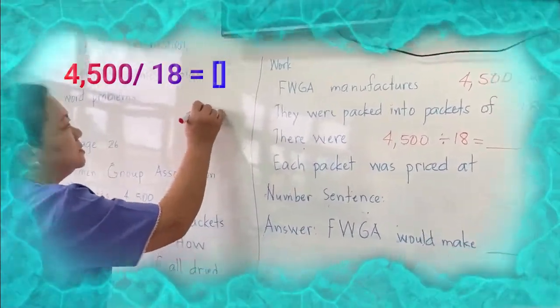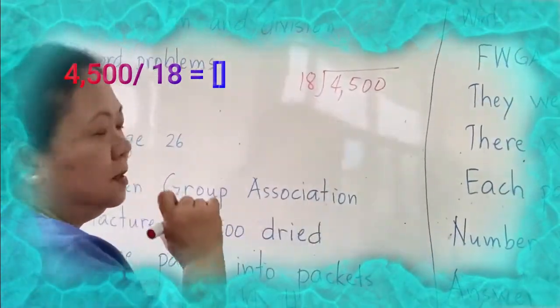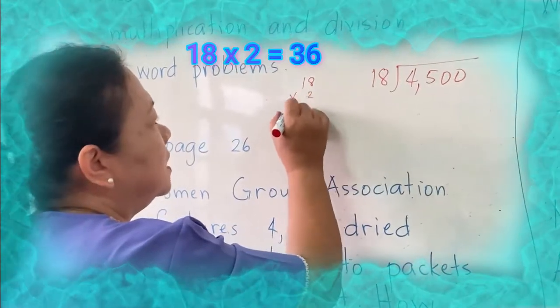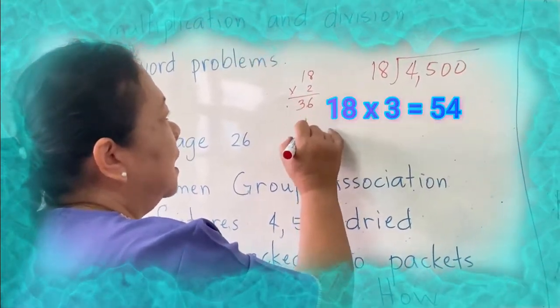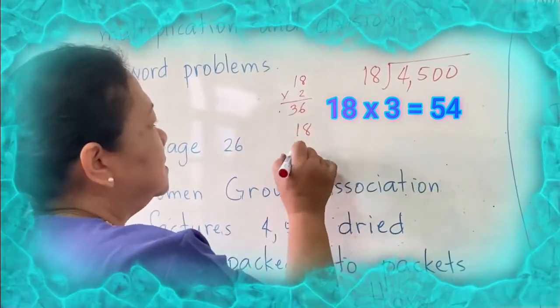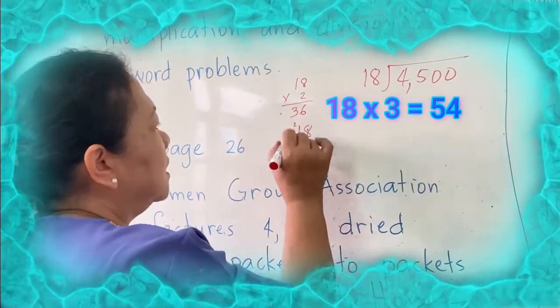4,500 divided by 18. Depend right here. 18 times 1 is 18. 18 times 2 is 36. 18 times 3 is, 3 times 8 is 24, 3 times 1 is 3, plus 2 is 5, 54.